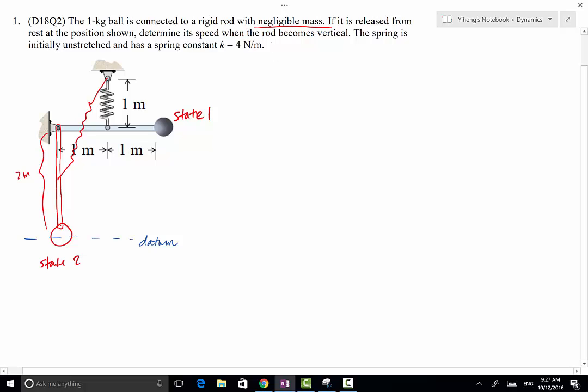Therefore, we have total T1 plus total U1 equals to total T2 plus total U2. Initially, the ball is at rest, so this equals to zero, no initial kinetic energy.